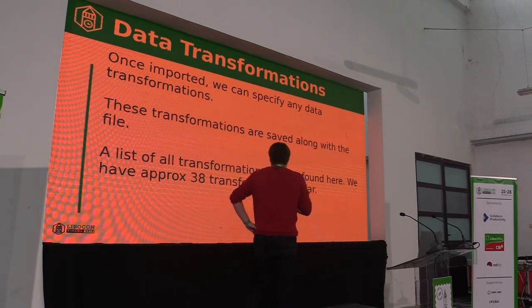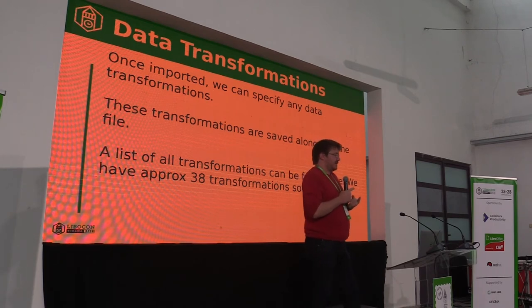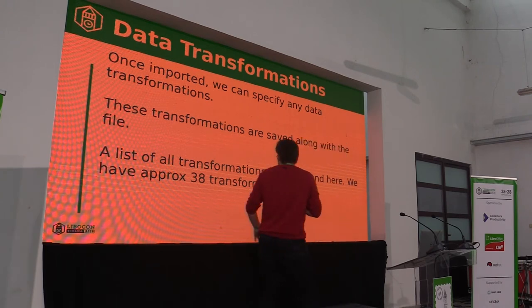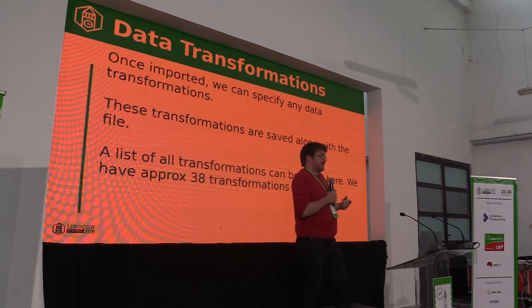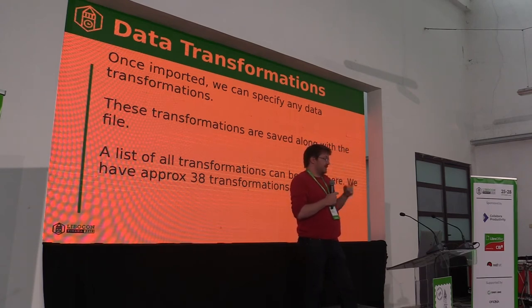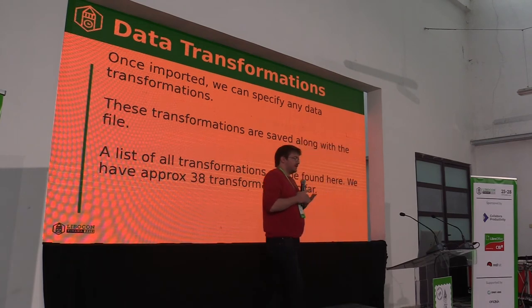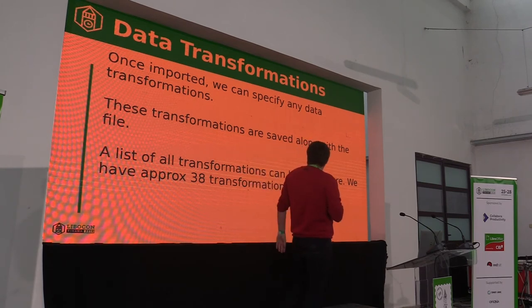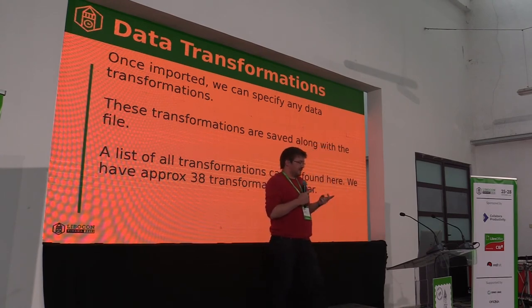Data transformations change the data and are basically some simple transformations that are usually applied on a whole column. Right now, as mentioned, after this work we have around 38 to 40 transformations. They do things like handling null values or missing values, changing the data format, text transformations, and so on. Hopefully we can add some more — there is a whole list of transformations that would be nice to have.